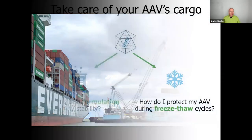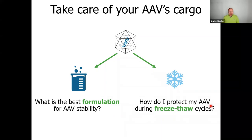In order to care for your AAV's cargo, you spend a lot of time finding the best possible capsid and the best possible transgene. But then you also have to find a good formulation that keeps your AAV nice and stable. We all like freezing things down, because when something is frozen it's normally preserved and can be stored for a very long time. Is there any way that the formulation can support the stability of an AAV during freeze-thaw cycles? These are questions very relevant to AAV development and developability.